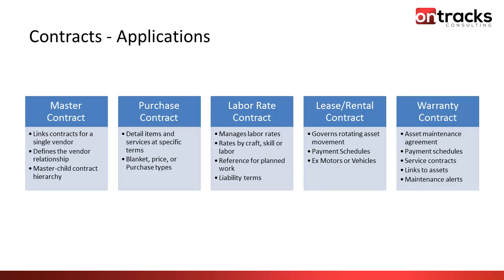Purchase contracts involve detailed items and services at specific terms. As I referred to, this covers blanket or price agreements for replenishing parts at a certain agreed price for a given period of time. We can also do it for services — if you're working with a Maximo service provider and have agreed rates for a particular period of time. You can also do blanket-type agreements for purchasing chemicals monthly and releasing against them over the course of a year.